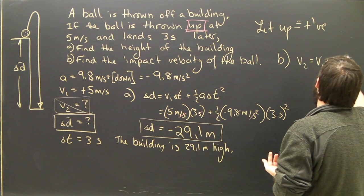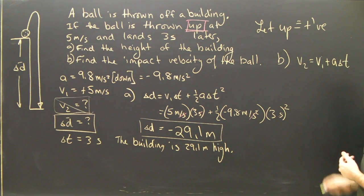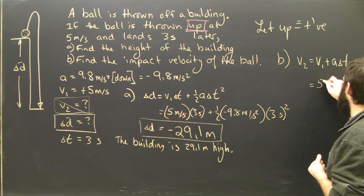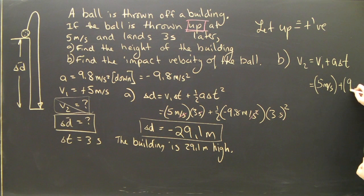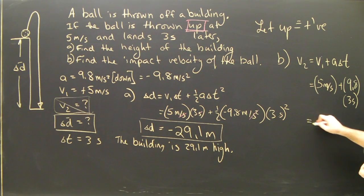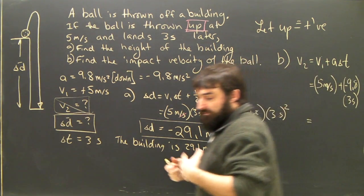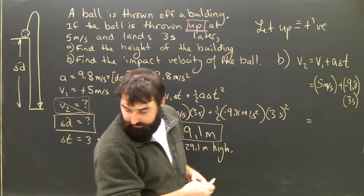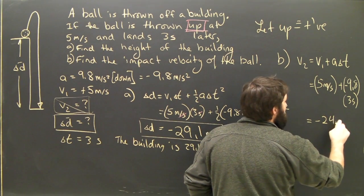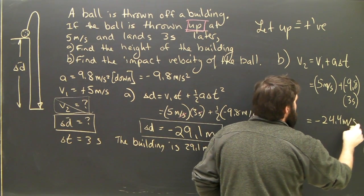V2 equals V1 plus A times T. I don't have a lot of room, but this is very simple. V1 is 5 meters per second plus negative 9.8 times 3 seconds. It works out to be 5 minus 3 times 9.8, which works out to negative 24.4 meters per second.